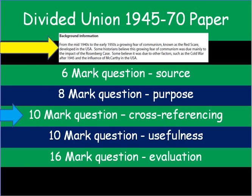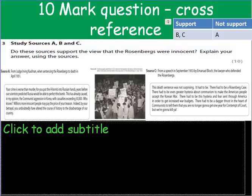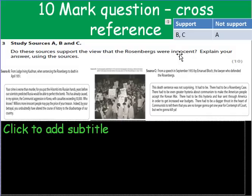This third question is asking you to look at three different sources. Let's have a look at an example with sources A, B, and C. The question is: do these sources support the view that the Rosenbergs were innocent? Explain your answer using the sources. So you're looking at three sources and deciding whether they support the view that they were innocent.